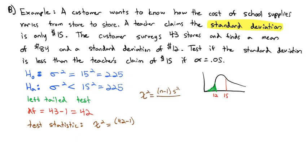n minus 1 times s squared divided by sigma squared. S is the standard deviation of the sample. So for my sample, the customer did a survey and found a standard deviation of 12. That is my sample standard deviation, 12 squared, to get the variance, divided by sigma, the claimed standard deviation of the population, which is 15. So we'll divide by 15 squared.